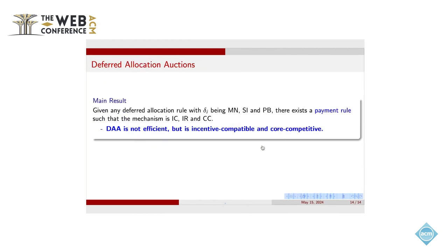So we have proved that given a proper delta, if we can find a deferred allocation rule, then we can always find the payment rule such that the total mechanism is IC, IR, and CC. So this is about the payment.